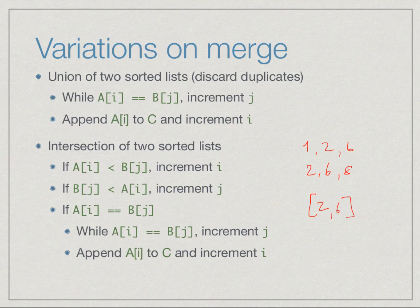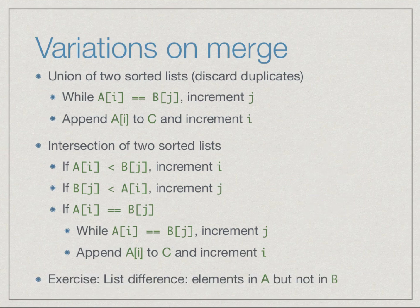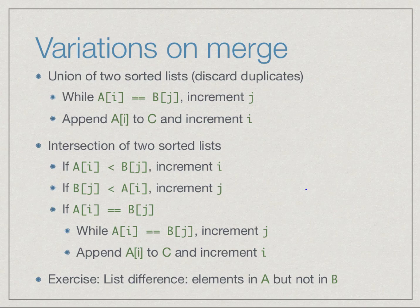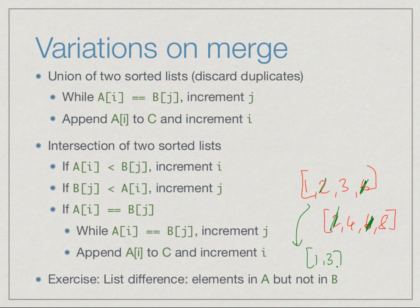So merge can be used to implement various combination operations. It can be used to take the union of two lists and discard duplicates, or the intersection of two lists. And finally, as an exercise to test that you understand it, see if you can use merge to do list difference. List difference is this operation: if I have 1, 2, 3, 6 and 2, 4, 6, 8, the difference is all elements in the first list which are not in the second list. So 2 is in both so remove it, 6 is in both so remove it. You should get 1, 3.